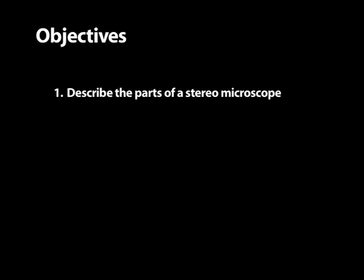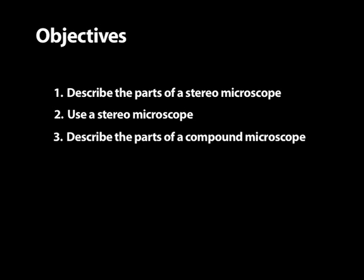The general objectives of this video are to help students: one, identify and describe the functions of the basic parts of a stereoscopic microscope, or as it is usually abbreviated, a stereomicroscope; two, set up, adjust, and use a stereomicroscope; and three, identify and describe the functions of the basic parts of a compound microscope.